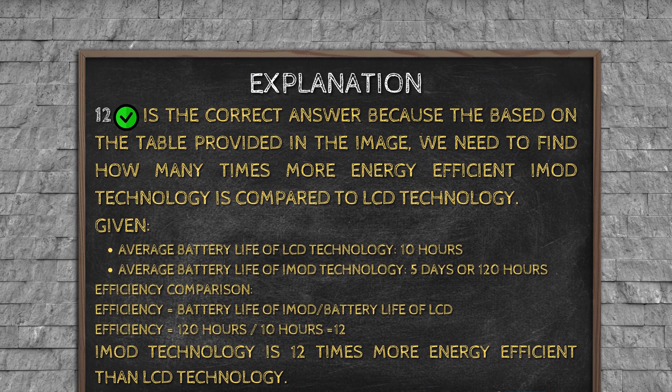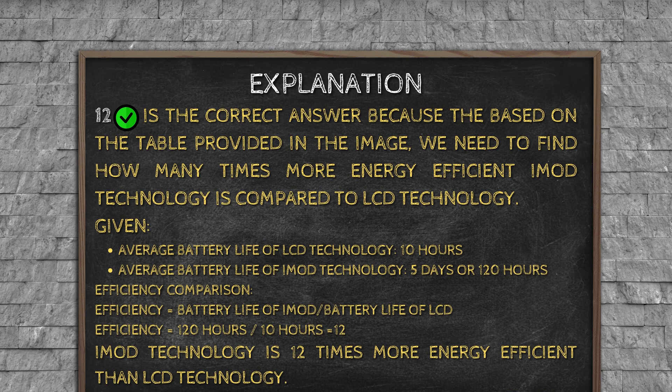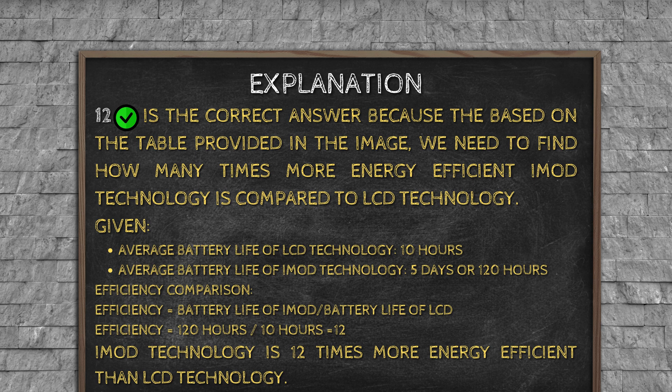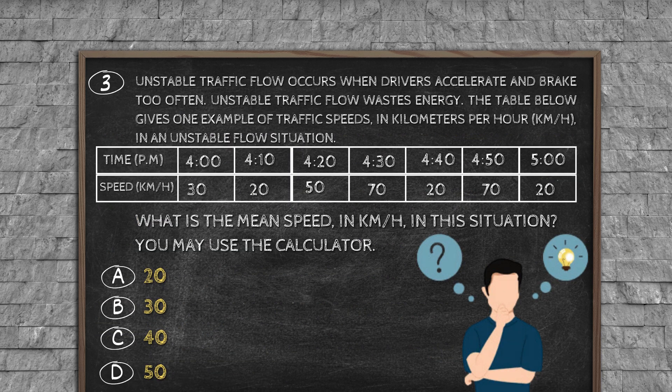Explanation: 12 is the correct answer because, based on the table provided in the image, we need to find how many times more energy efficient iMod technology is compared to LCD technology. Given average battery life of LCD technology: 10 hours, average battery life of iMod technology: 5 days or 120 hours. Efficiency comparison: efficiency equals battery life of iMod slash battery life of LCD, efficiency equals 120 hours slash 10 hours equals 12. iMod technology is 12 times more energy efficient than LCD technology.